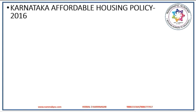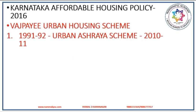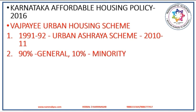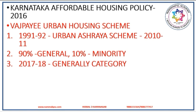To meet the needs of urban housing, Karnataka government launched the Karnataka Affordable Housing Policy in 2016. Under this policy, KHB will take up projects in public-private partnership, which will take necessary actions to construct at least 50% of houses or flats for economically weaker section and lower income group categories. The Vajpayee Urban Housing Scheme was launched in 1991-92 as Urban Ashria Scheme and renamed in 2010-11. Presently, 90% of the target is reserved for general category and 10% for minority, but from 2017-18 the target is fixed only for general category.